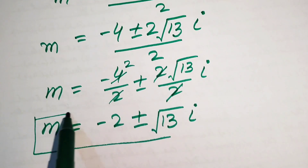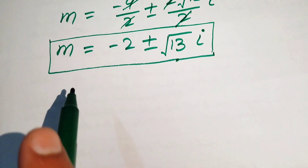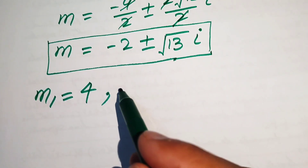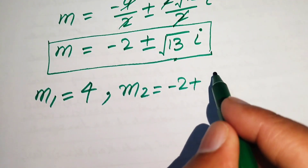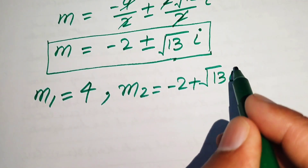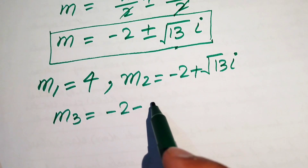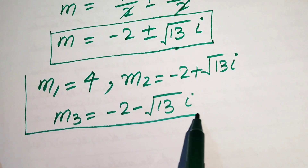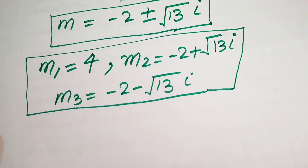These two remaining roots are complex. So the three roots of the given equation are: m₁ = 4 (the real root), m₂ = -2 + √13·i, and m₃ = -2 - √13·i. This is the final answer. Thank you for watching — please subscribe to the channel for more videos.